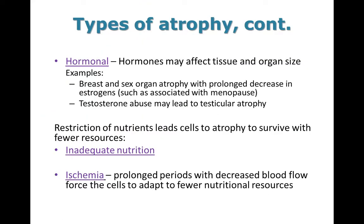Lack of hormonal stimuli can also cause atrophy. For example, breast tissue and sex organs with decreased estrogen exposure will shrink after menopause. Also, men who abuse testosterone may experience testicular atrophy. Inadequate nutrition frequently leads to atrophy as well. When cells are starved, either by physical starvation or by a reduced blood supply, the cells will shrink in size — again, that is an attempt to decrease their energy requirements as a survival tactic.